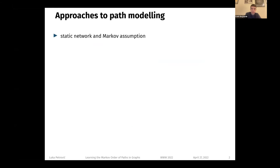The simplest way to model such data is by using a static network representation and assuming that the process is Markovian, which means that the next node depends only on the current node and not on the nodes that have been visited in the past.